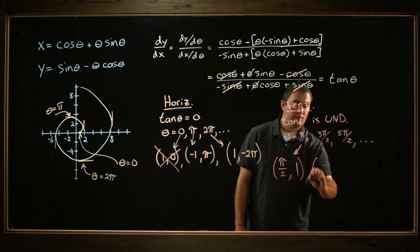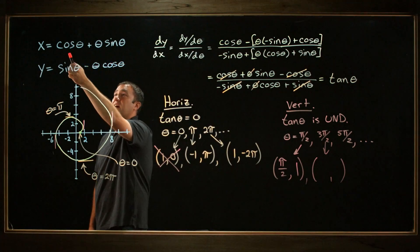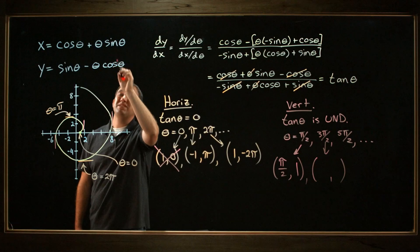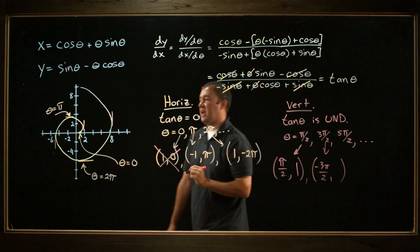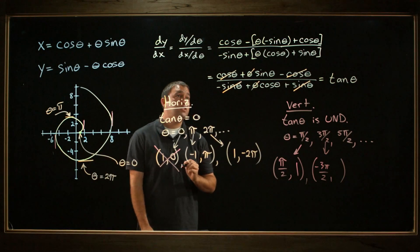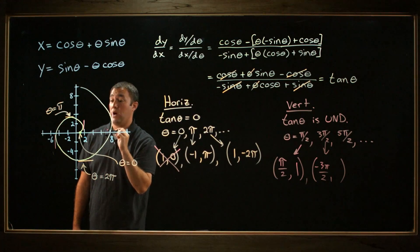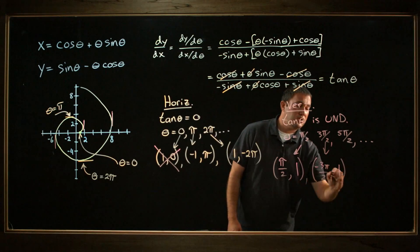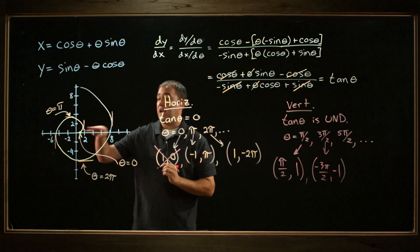Let's look at 3 pi over 2. Plugging in theta equals 3π/2 into x: cosine(3π/2) is 0, plus 3π/2 times sine(3π/2), which is negative 1, giving x equals negative 3π/2. So x should be negative, and I do have a vertical tangent point when x is negative. Plugging 3π/2 into y: sine(3π/2) is negative 1, minus 3π/2 times cosine(3π/2), which is 0, so y equals negative 1. That looks like it could be about 1 below the x-axis.